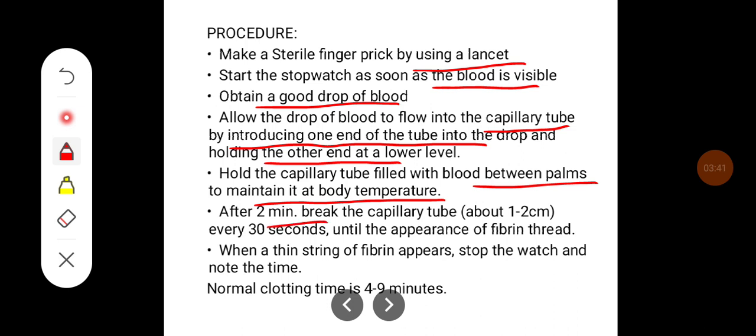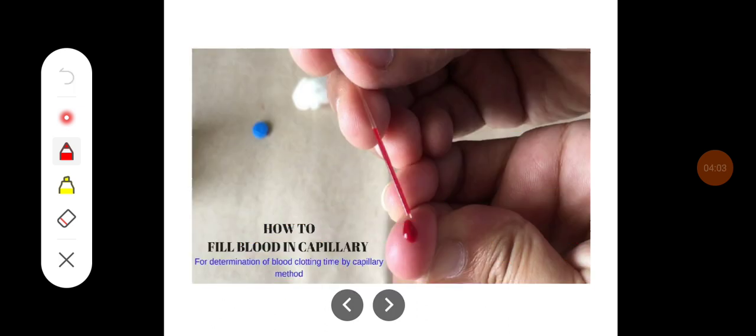After two minutes, break the capillary tube about 1 to 2 centimeters every 30 seconds until the appearance of the fibrin thread. When a thin string of fibrin appears, stop the watch and note the time. That will be the clotting time. The normal clotting time is 4 to 9 minutes.